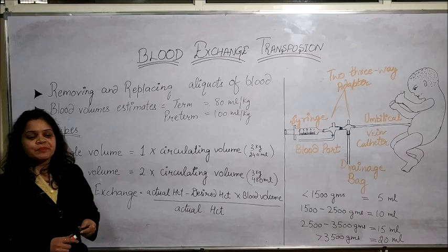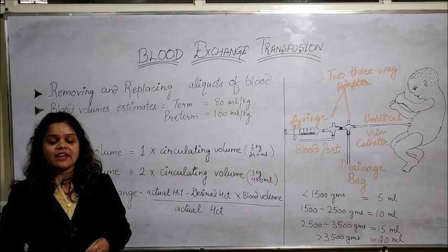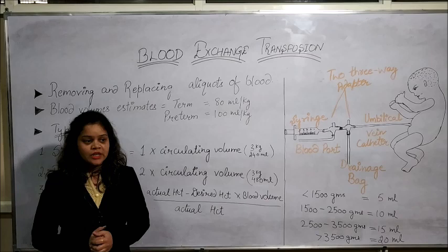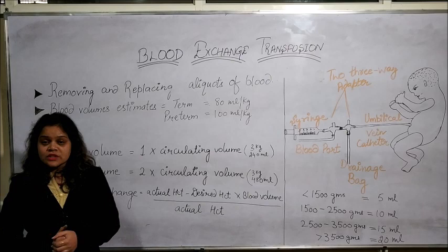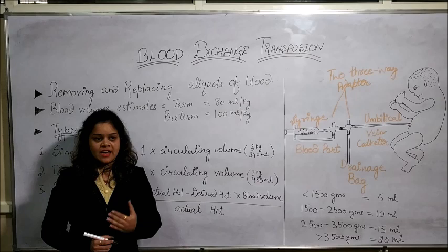Why do we need to do blood exchange transfusion? It is used when there is severe hyperbilirubinemia — when other therapies like phototherapy or other medical therapies have failed and the serum bilirubin level is in an increasing trend which is not coming under control. Other cases include connectorals, autoimmune disorders, isoimmunization, G6-PD deficiency, severe anemia, polycythemia, etc.